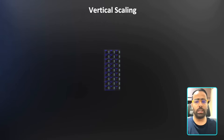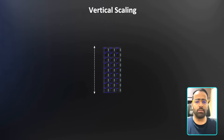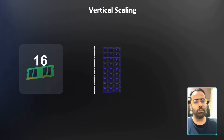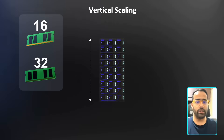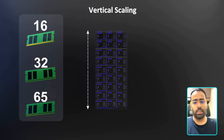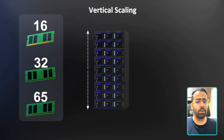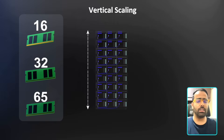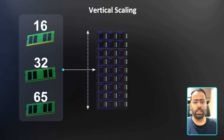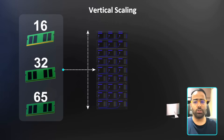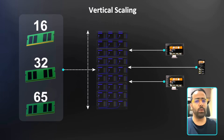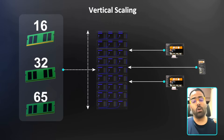The first step as a developer is to do vertical scaling. Vertical scaling means increasing the configuration of your existing server — for example, going from 16 GB RAM to 32 GB to 64 GB. You're not increasing the number of machines, but increasing the capacity of your server, so it can handle more requests.